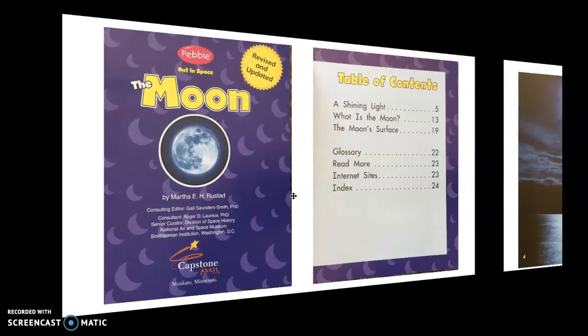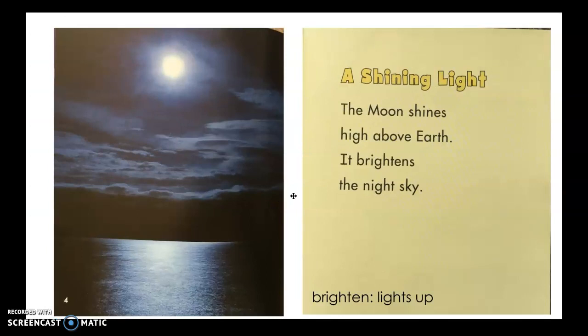Let's read the moon. A shining light. The moon shines above the earth. It brightens the night sky. Brighten means lights up.